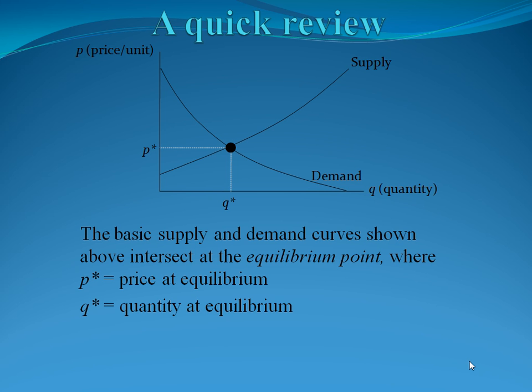Where they intersect is called the equilibrium point. This is where we expect the market to settle. P star will represent the equilibrium price, and Q star will represent the equilibrium quantity.